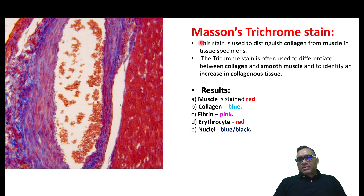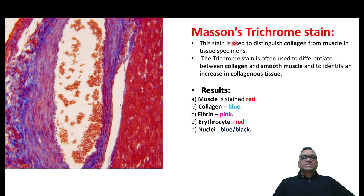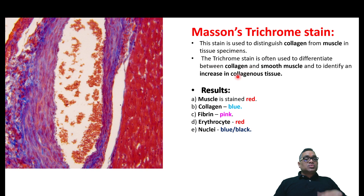The first stain is Masson trichrome stain, which is very important and there is an image given in Robbins as well. This stain is used to distinguish collagen from smooth muscle in histopathological sections. So please remember: it is for identification of collagen. The basic confusion is with muscle — collagen versus muscle can be identified by Masson trichrome stain. It is also used to find out more collagen within the tissue.